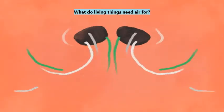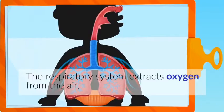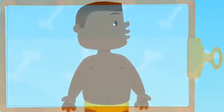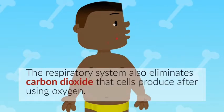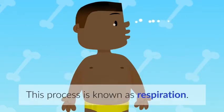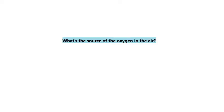The respiratory system extracts oxygen from the air, a gas our cells need to live and grow. The respiratory system also eliminates carbon dioxide that cells produce after using oxygen. This process is known as respiration. Humans, animals, and plants need the oxygen in the air to live. They cannot breathe without it. The respiration process is essential for living beings on Earth.